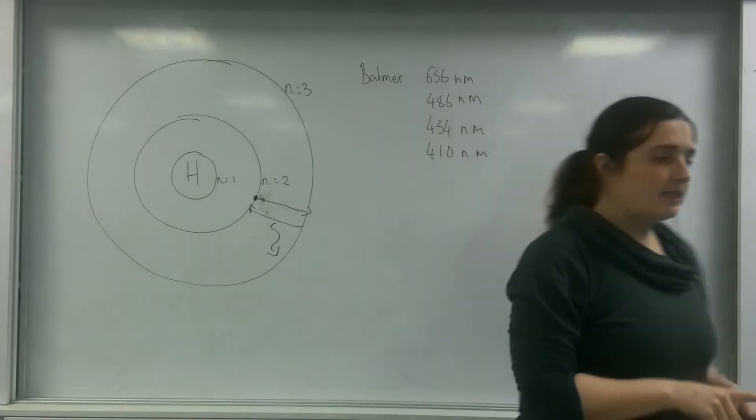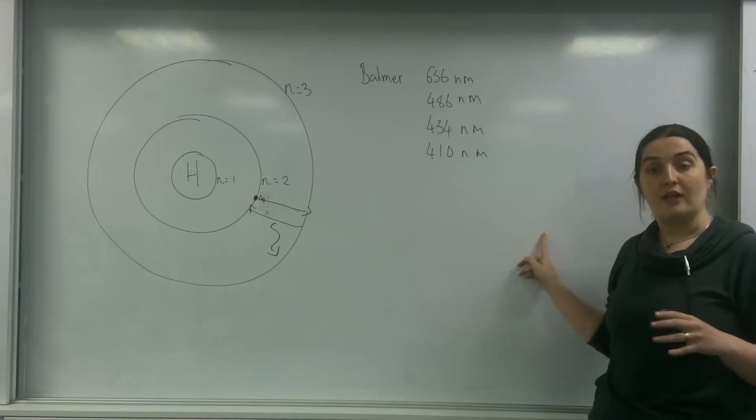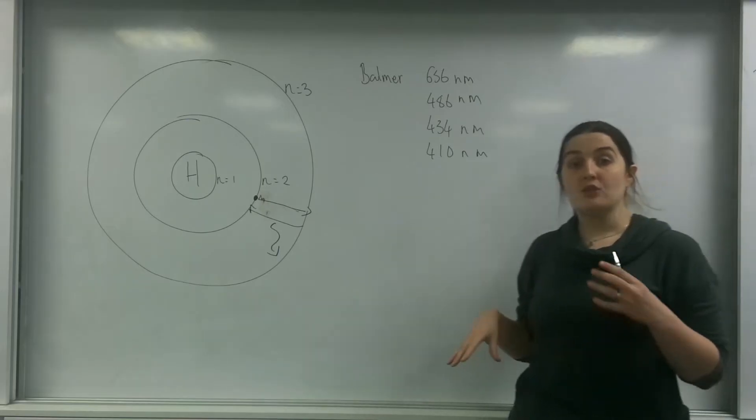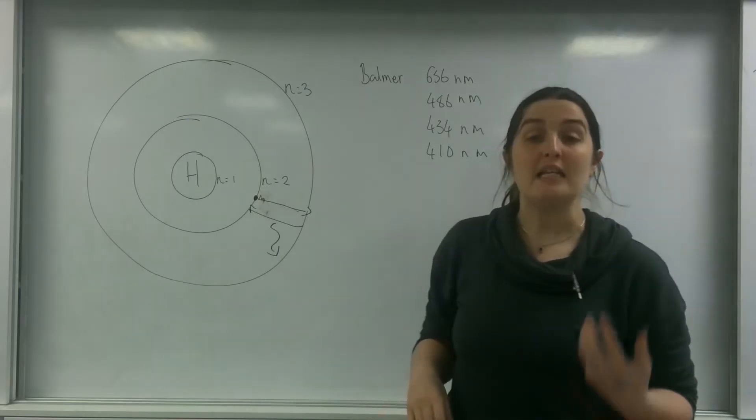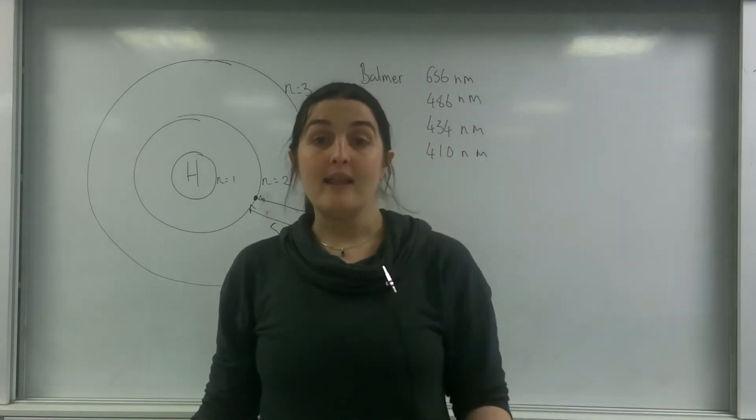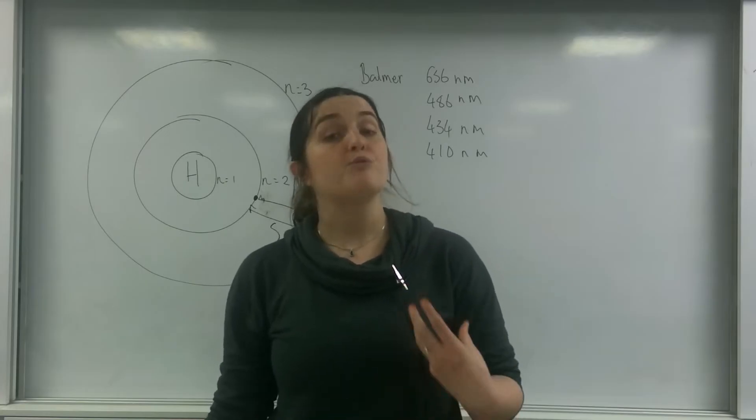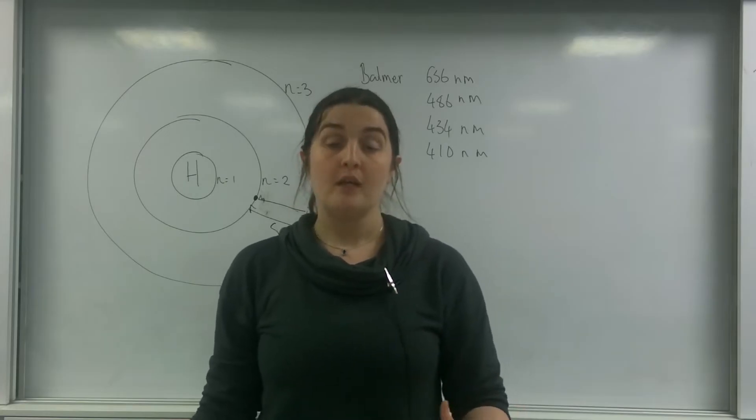What the scientists actually looked at was looked for these specific lines for the n equals 2 and saw how prominent they were in a star's spectra. If they were prominent, they were a star that was deemed to be high in hydrogen that was ready to fuse.